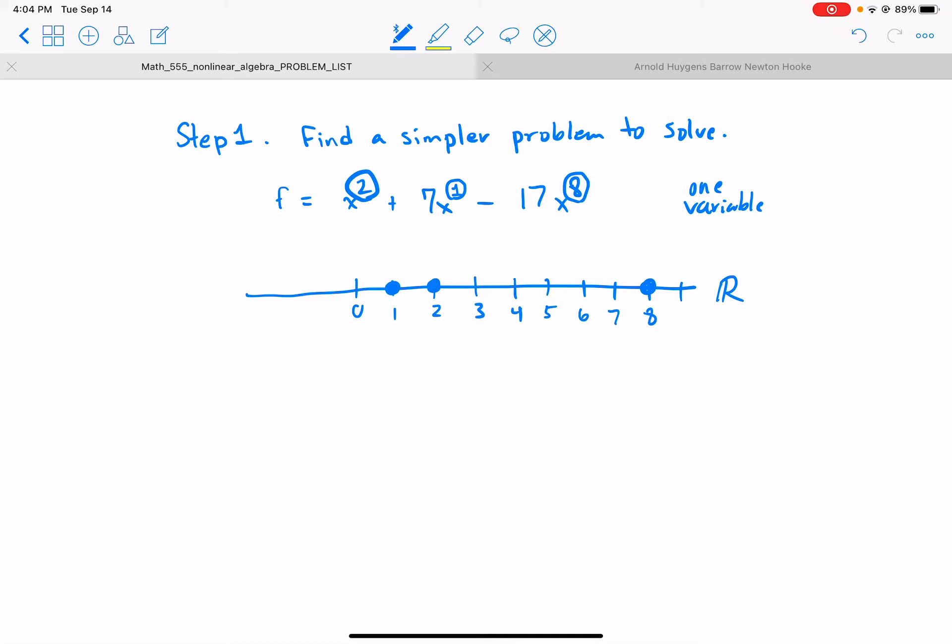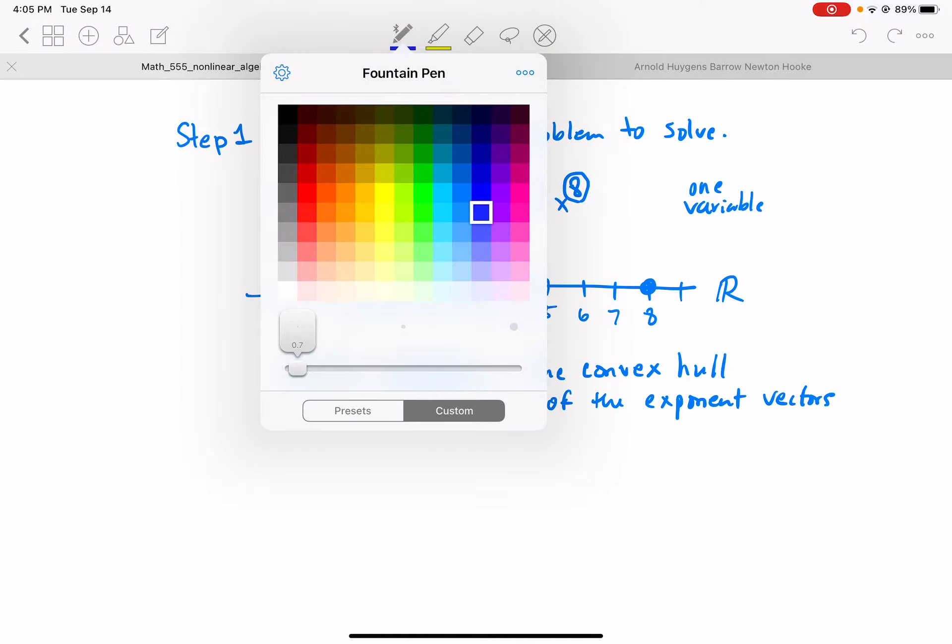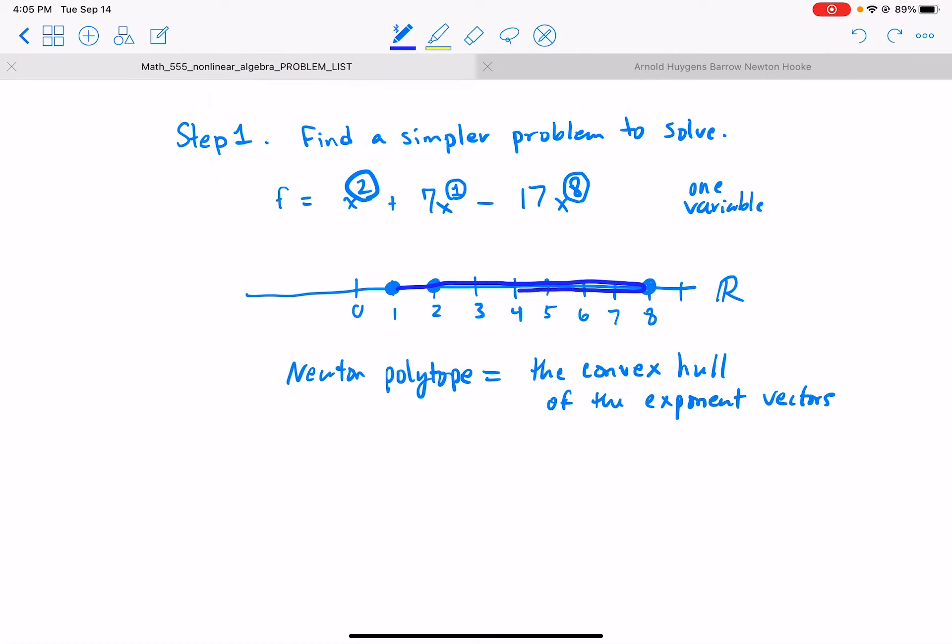It's just going to put a dot at these exponents. Oh wait, this is a one. Okay, and this is an eight: five, six, seven, eight. So the Newton polytope equals the convex hull of the exponent vectors.